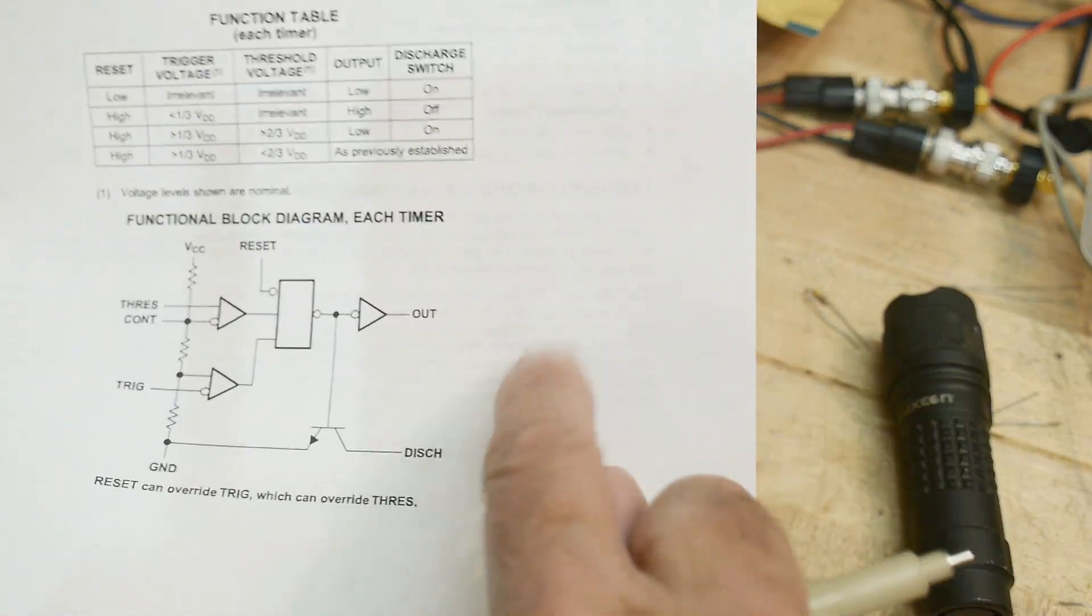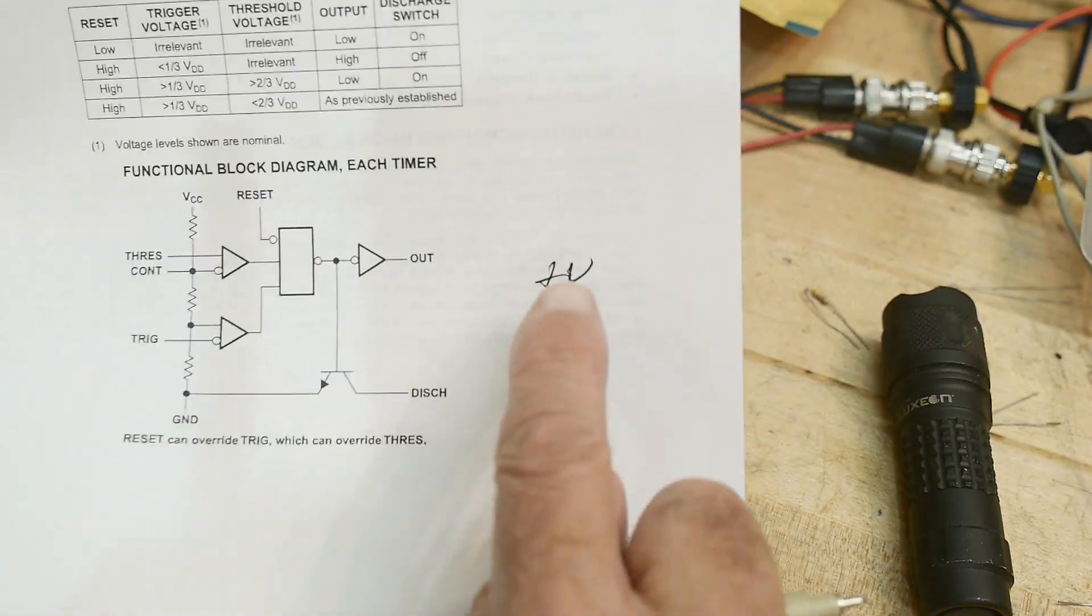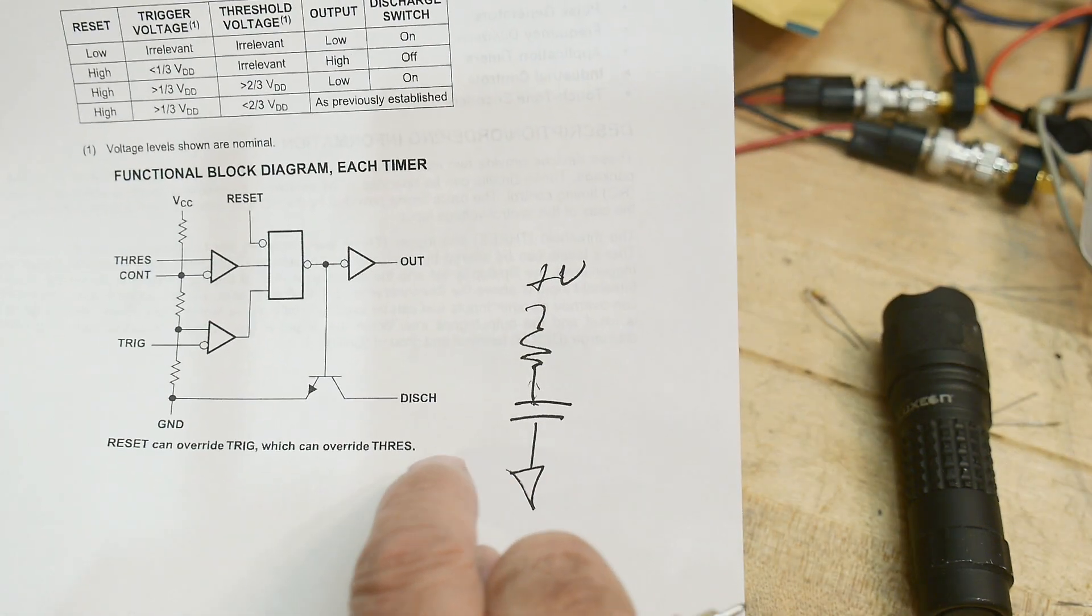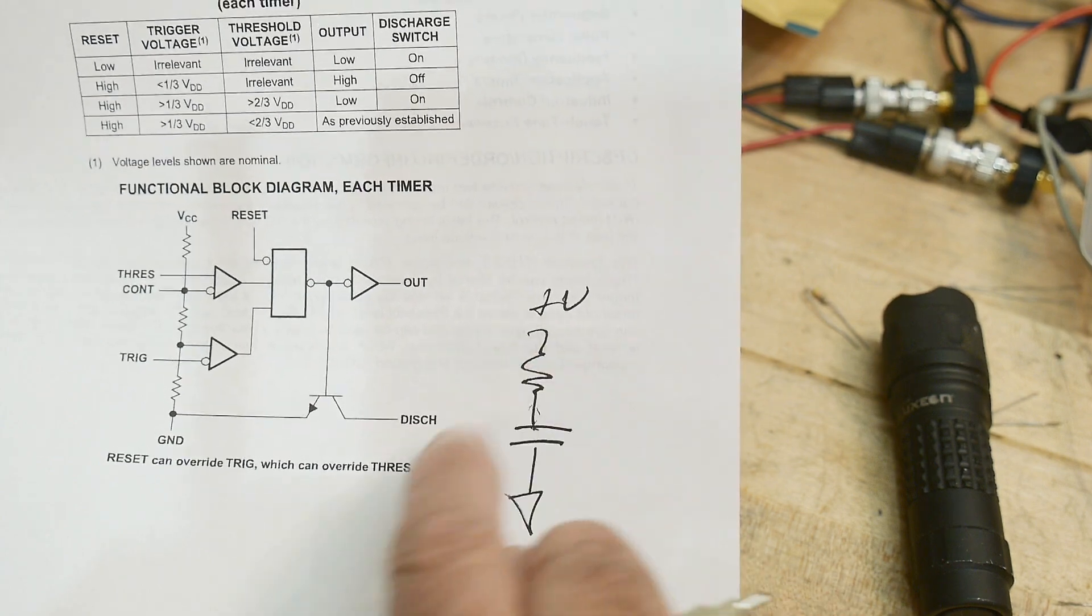Okay, so we have a resistor here. We have plus V and the resistor, so that capacitor gets charged up. Okay, charged up.